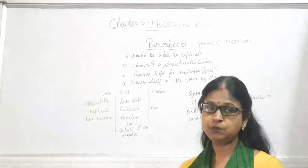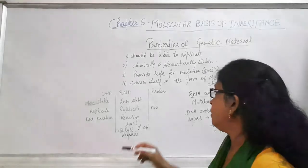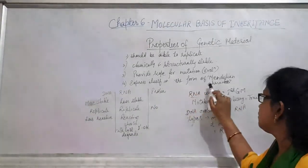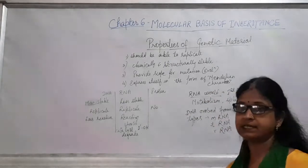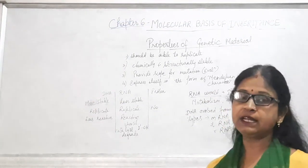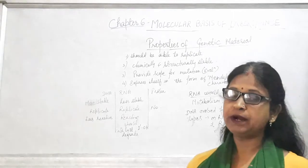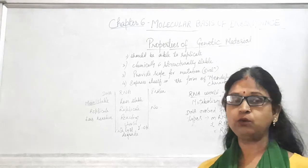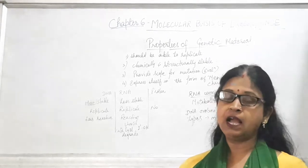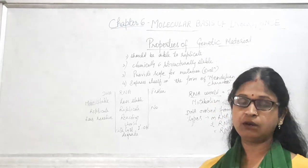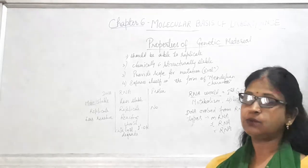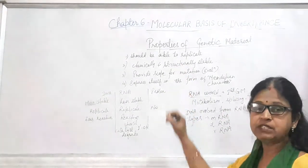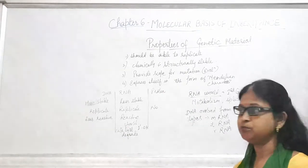The fourth property is that the genetic material should express itself in the form of Mendelian characters. That means whatever theories Mendel gave, that material should have the property to follow Mendel's rules and laws. These are the main characteristics which should be present in the genetic material.